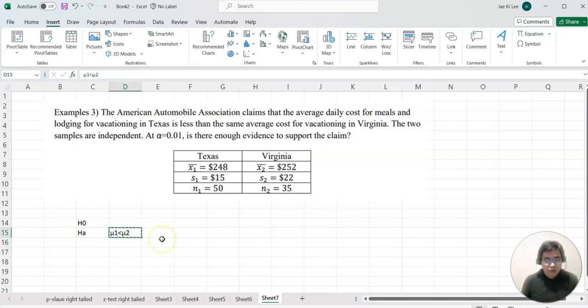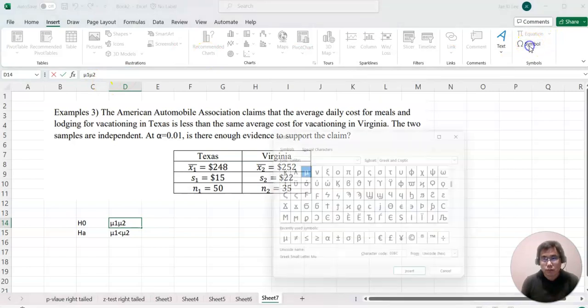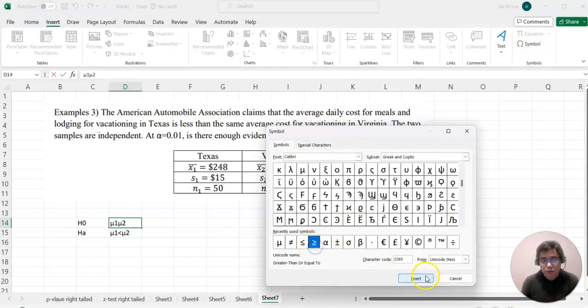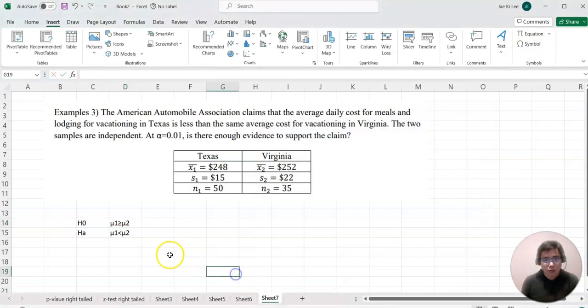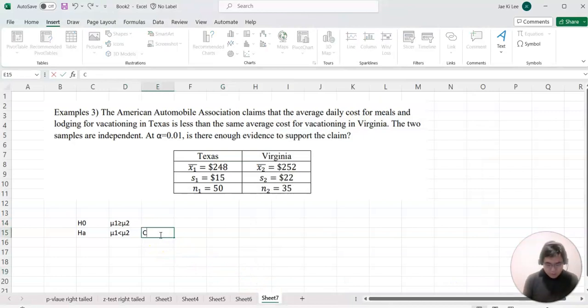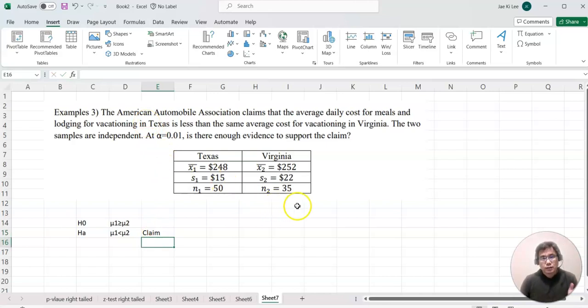I'm going to copy this to here, then I'll switch this one. Insert symbol and then greater than or equal to. This is our claim because it shows that less than the second place.